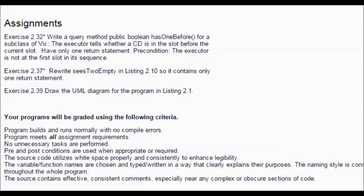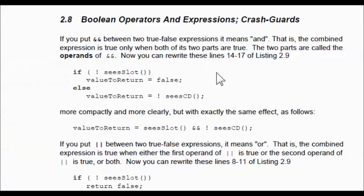Next we go on to exercise 237. It says rewrite the CsEmpty listing in 2.10 so it contains only one return statement. This is in the chapter section on Boolean expressions and crash guards.